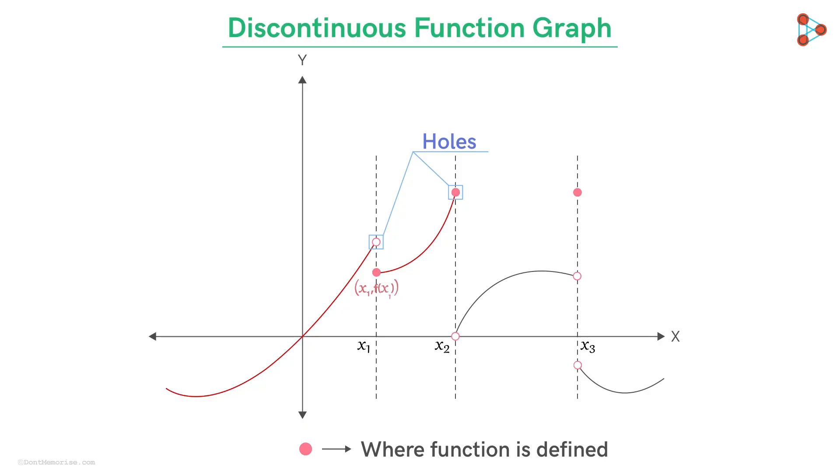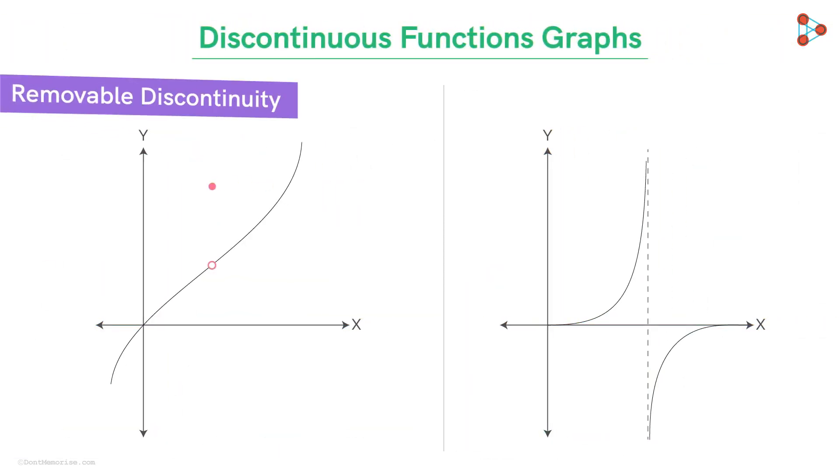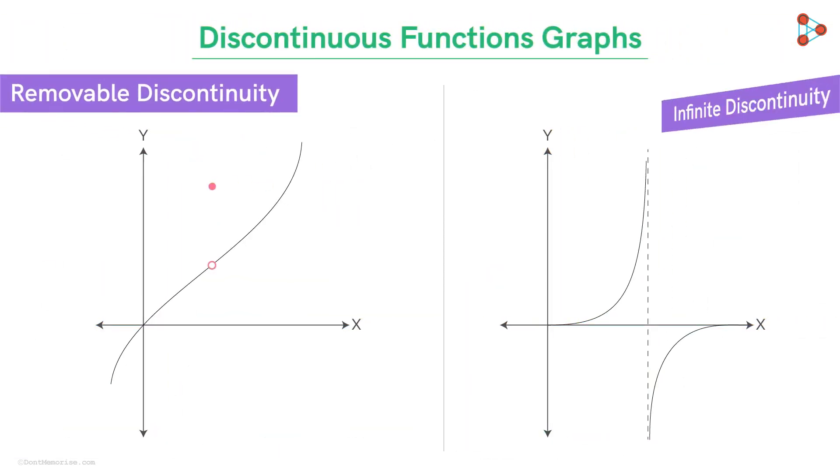This is one type of discontinuous function. And it shouldn't be surprising now that this type is called jump discontinuity. There are two other types of discontinuities: removable discontinuity and infinite discontinuity. But we will leave them for some other video.